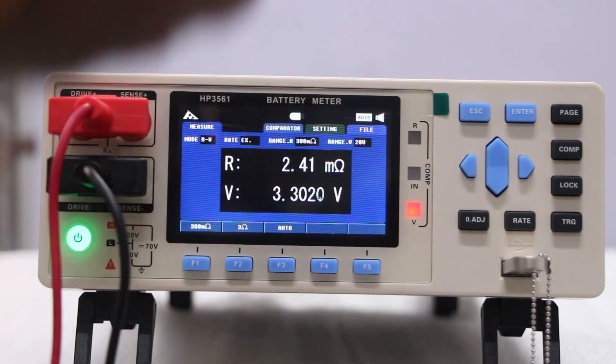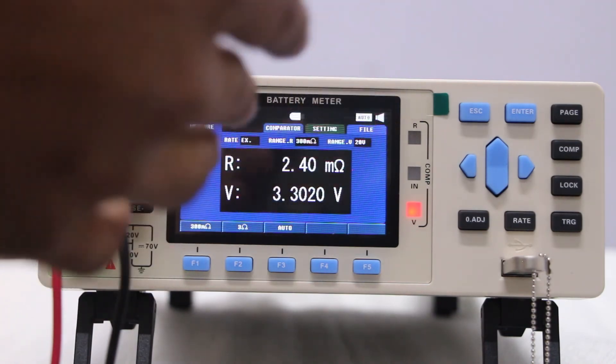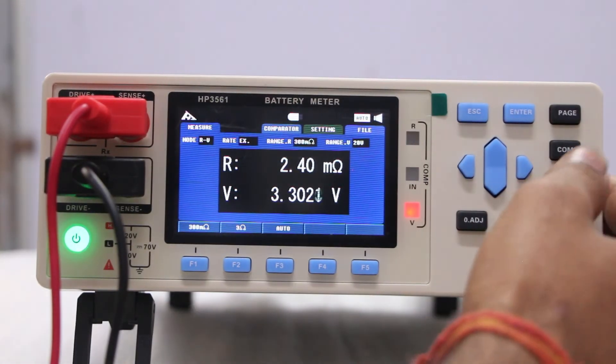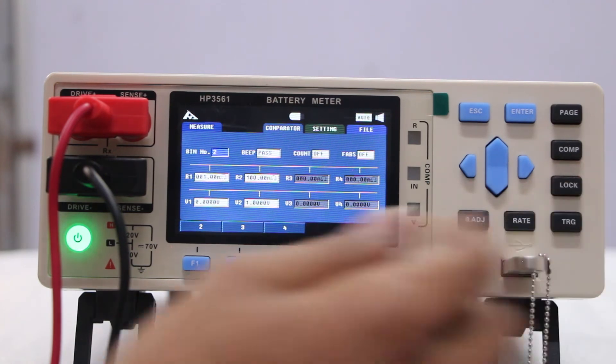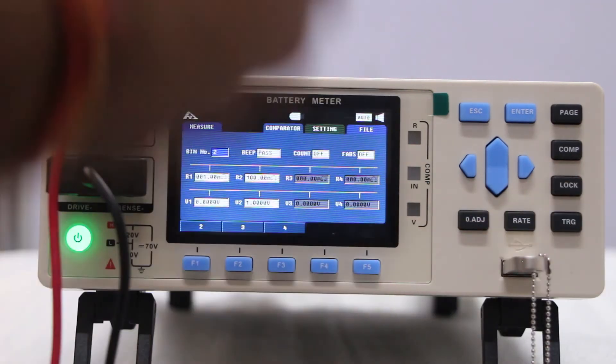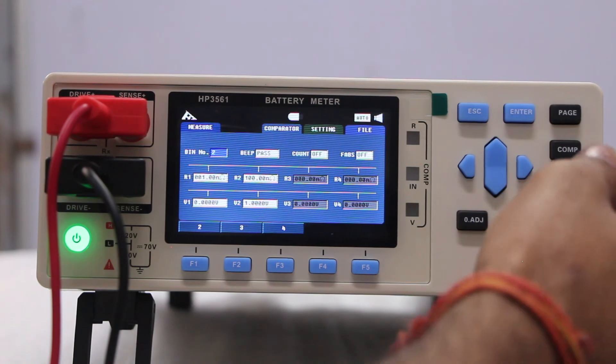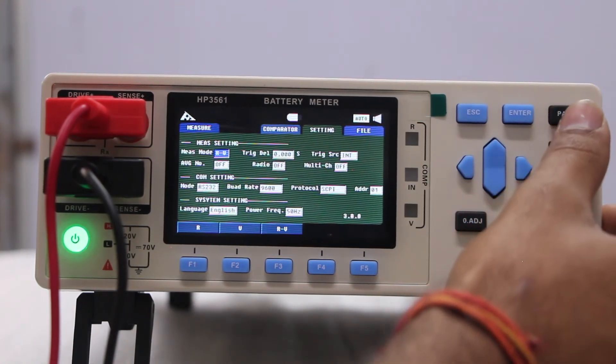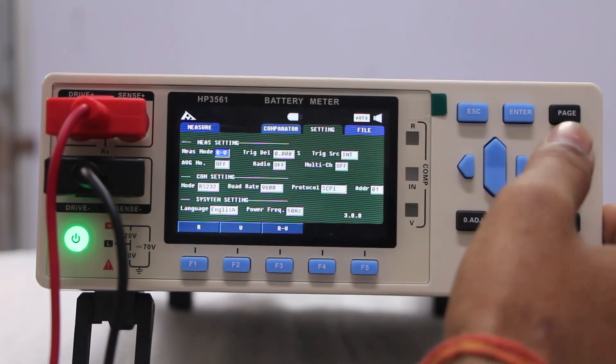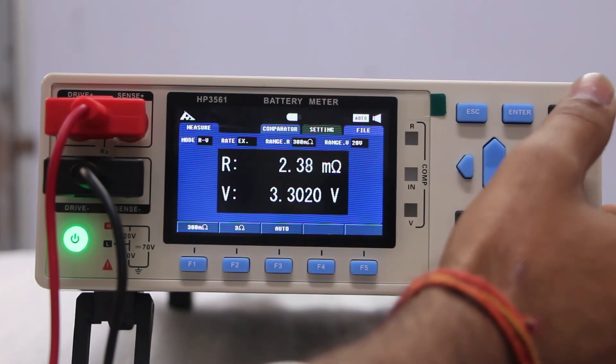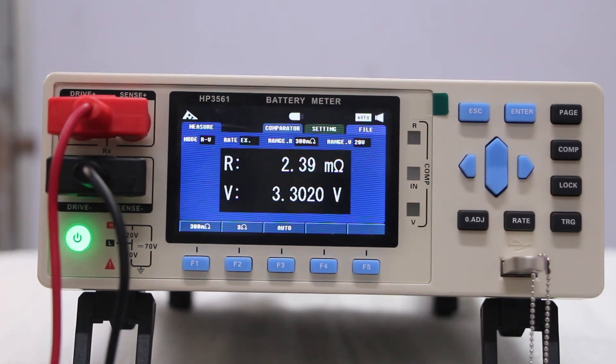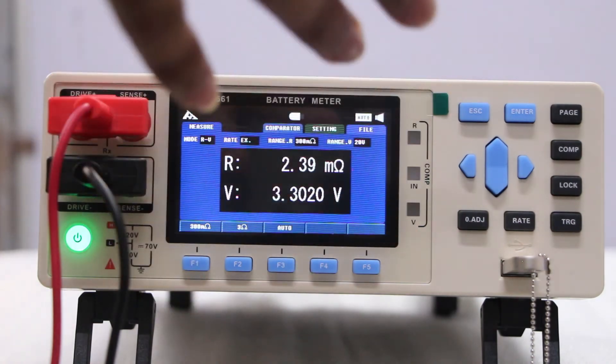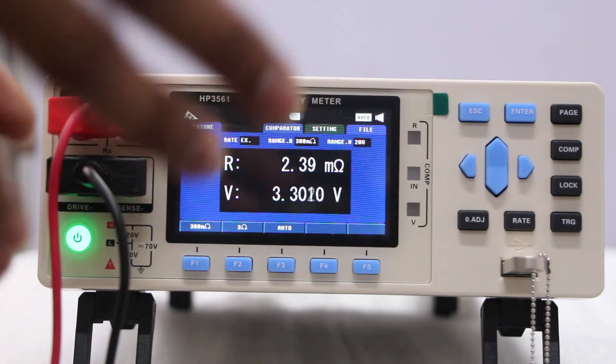And there is for software interface there is a setting in software interface you can also set like you have to click on page as you can see that there is software interface there is comparator setting purpose and there is setting purpose each and everything is within this range. This is all about our machine in hardware basis now I am going to show the software of this machine.